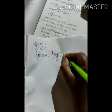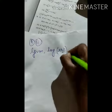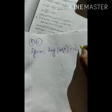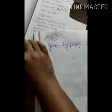First, given to us: log of (a+b)/4 is equal to 1/2 log(ab). This is what is given to us.